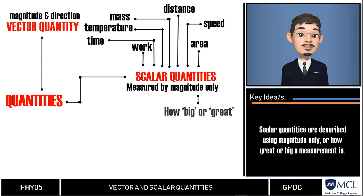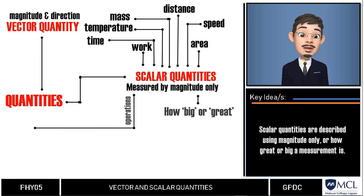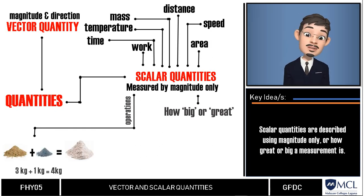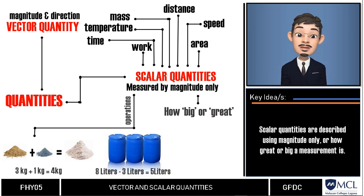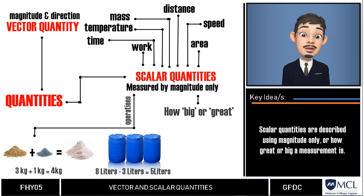An easy part of the scalar quantity is that it can be added and subtracted, multiplied and divided, like ordinary numbers. Say 3 kg of sand is added to 1 kg of cement, the resulting mixture is 4 kg. Or when 5 liters of water are poured from a pail that has 8 liters, the resulting volume is 3 liters.